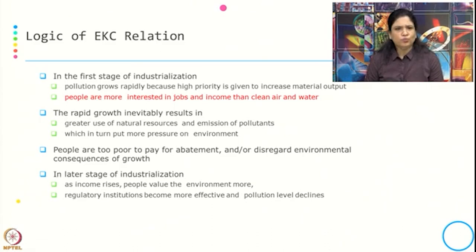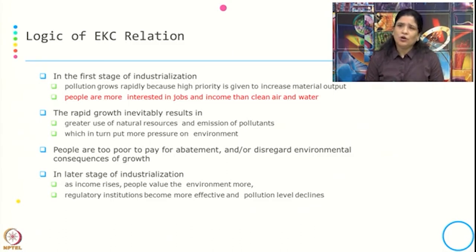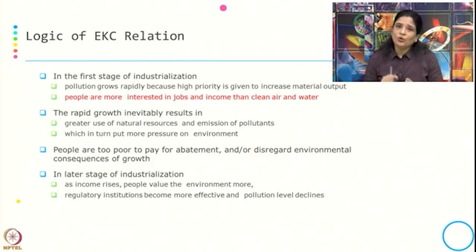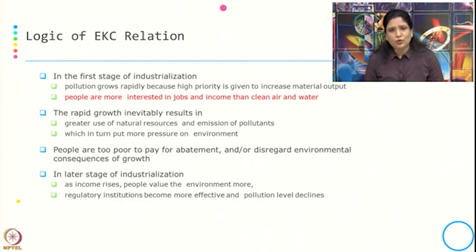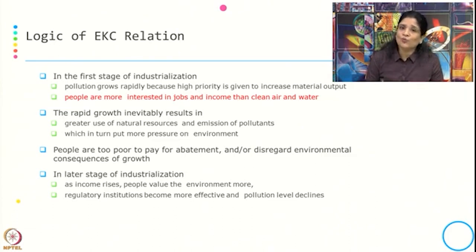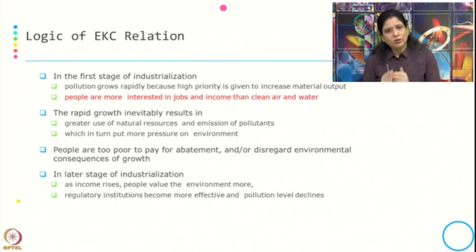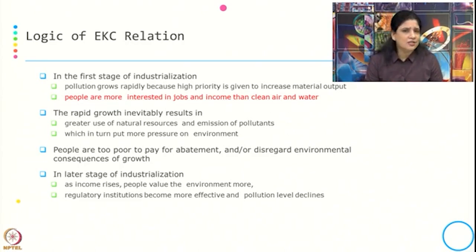In the first stage of industrialization, pollution grows rapidly because high priority is given to material inputs. The focus of the economy at that point is how to create more employment opportunities and more economic opportunities, rather than activities that give clean air or clean water. Whenever growth happens at the initial phase, there is more importance given to income, but it is also creating more degradation. This rapid growth typically results in greater use of natural resources — using resources, emissions of pollutants — because we are not giving more emphasis to cleaner technology. People are too poor to pay for abatement, or they disregard the environmental consequences of growth.